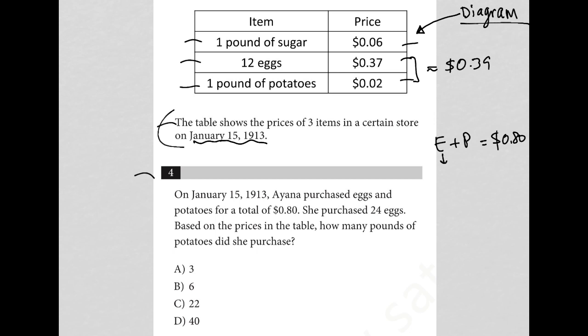We know that she purchased 24 eggs. We also know that the cost for 12 eggs is 37 cents, so she purchased two of those. She purchased two dozen eggs. So I'm going to say this is $0.37 times 2 plus